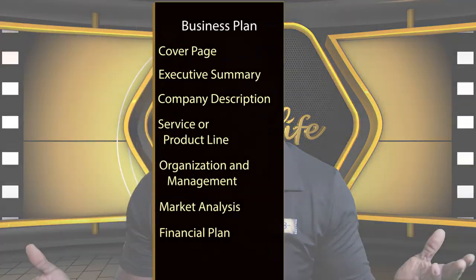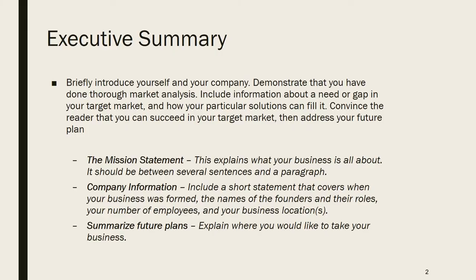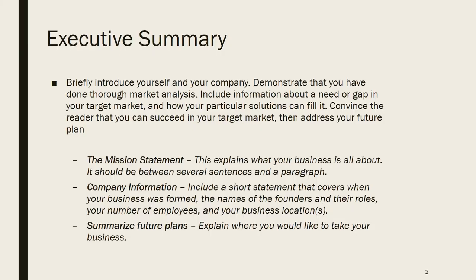Once you have all the parts of the business plan done, you can go back and write the executive summary, which consists of everything we just covered, all put together in a simple summary. You also want to have a mission statement or slogan — state what your company is primarily about, whether it's catering to veterans, a specific cultural community, budget clients, or high-end customers. State it clearly as your mission statement.